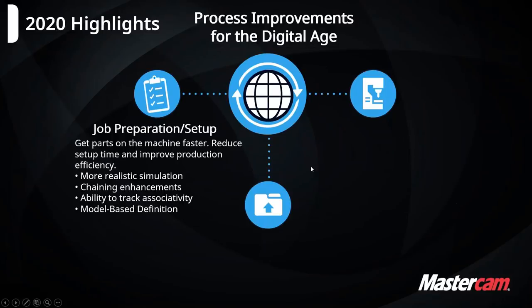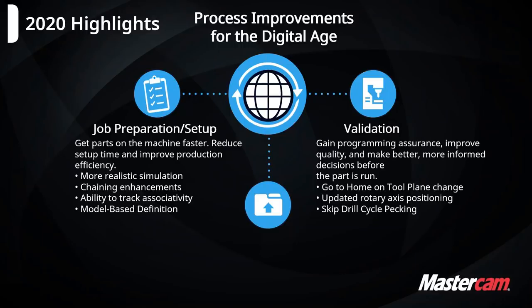Some of the accelerated finishing is in multi-axis software. For the 2020 release, we're focusing on job prep and setup — basically getting the part ready to get tool paths applied and getting that part on the machine in the shortest amount of time, that print-to-part time. We also have enhancements to model-based definitions, simulation improvements, and validation. The goal is when you hit that G1 button in Mastercam to generate code that's exactly what you want to run on the machine, without hacking it up in the editor or editing at the controller.